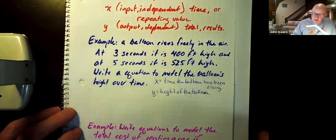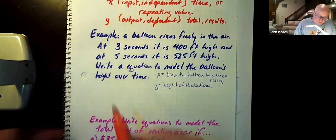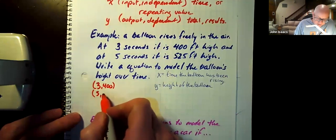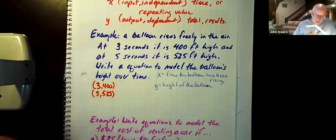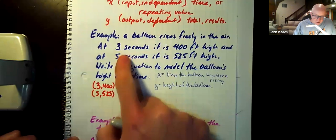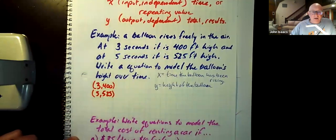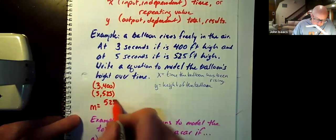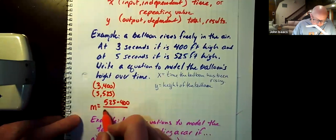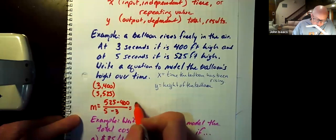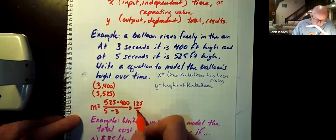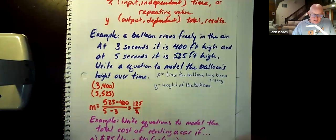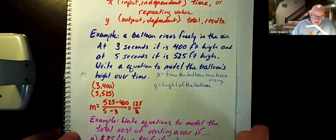So we have the points, let's see, we have 3, 400 as a data point, and we have 5, 525 as another data point. Notice our x and y values that came out of the problem. So in order to do our slope, we need to subtract our y values and divide them by the subtraction of our x values. So we have 525 minus 400 which is 125 over 5 minus 3 which is 2 as our slope. And because those don't divide, you can leave them just like that.